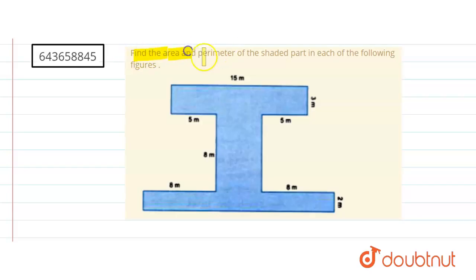Now in this question, we have to find the area and perimeter of the shaded part of the following figure. First of all, we just divide this figure into some parts so that it is easy to find out the area.